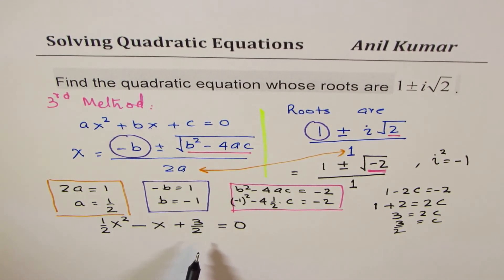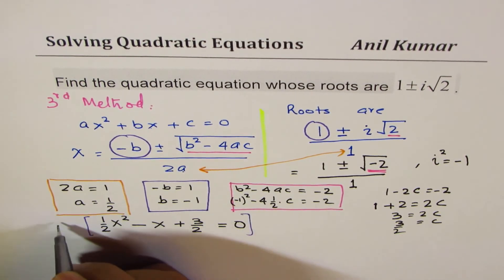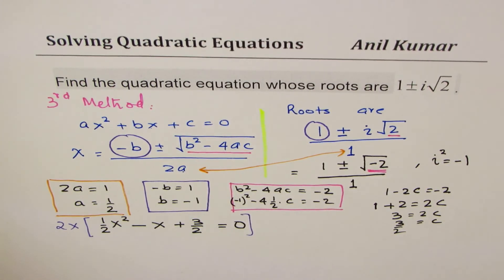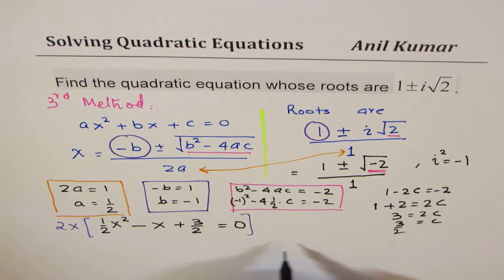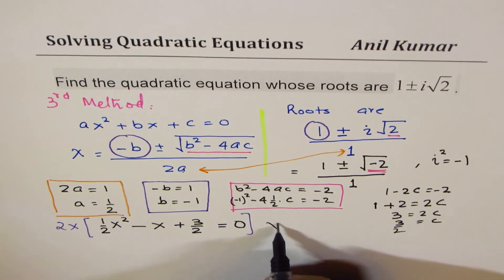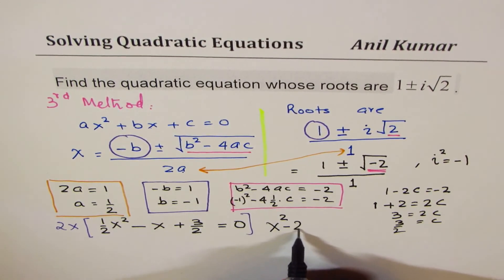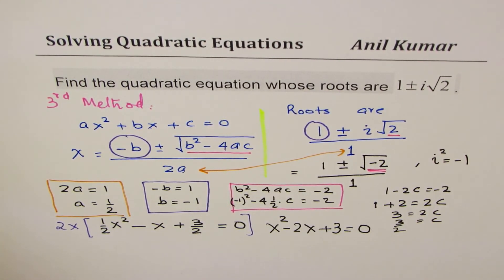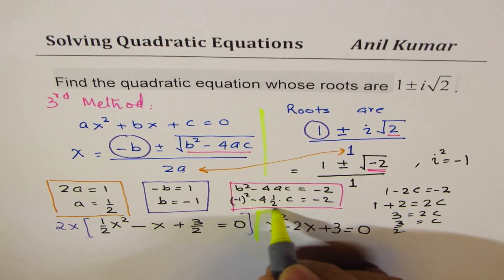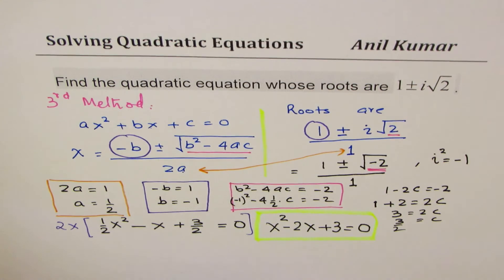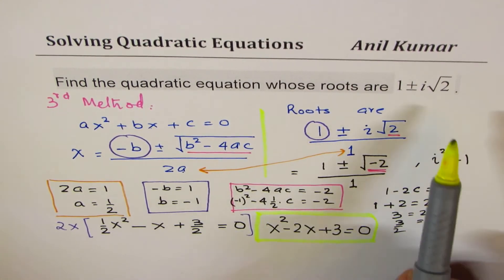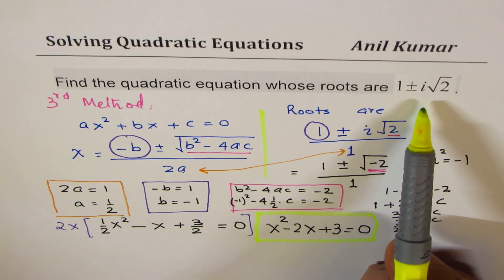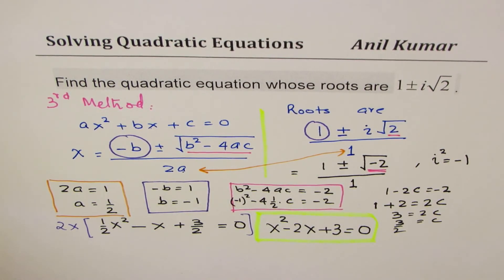Multiplying everything by 2 gives x² − 2x + 3 = 0, which is exactly the same result we got with the previous methods. So we can use this method to find the quadratic equation for any given complex roots, which always appear in conjugate pairs.